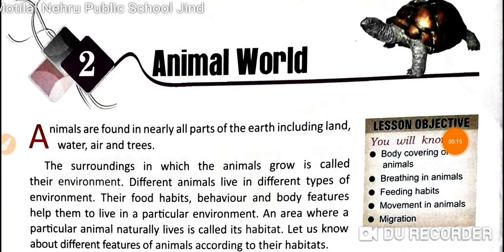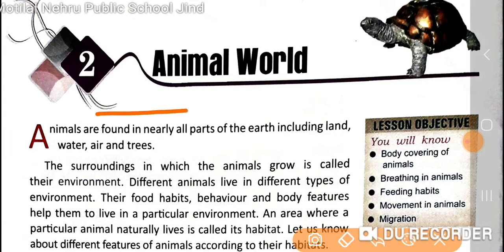As you can see in the very first page of this chapter, you have various kinds of animals. Animal world is a big world. Animals are found in nearly all parts of the earth, including land, water, air, and trees.